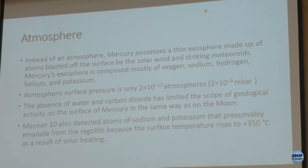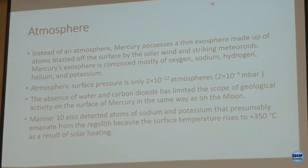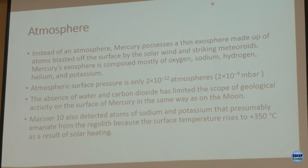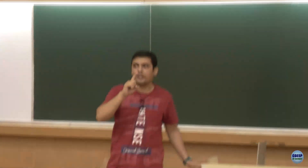Mercury has no actual atmosphere — it has only an exosphere directly at the surface. An exosphere is extremely thin — only a few molecules per cubic centimeter. This exosphere contains oxygen, sodium, hydrogen, helium, and mercury atoms. The atmospheric pressure is 10 to the power of minus 12 atmospheres, meaning it's one trillion times thinner than Earth's atmosphere.